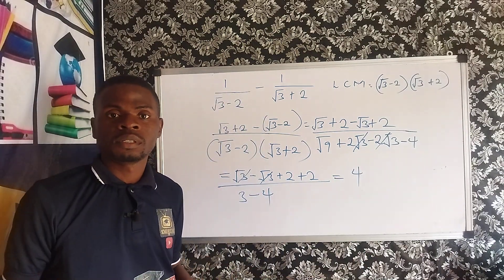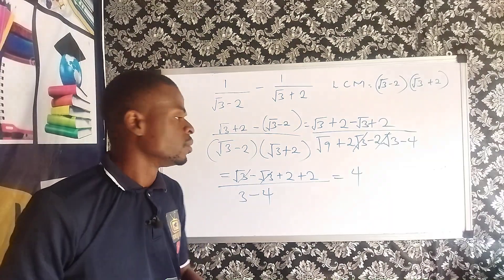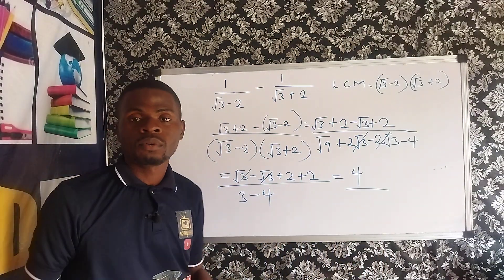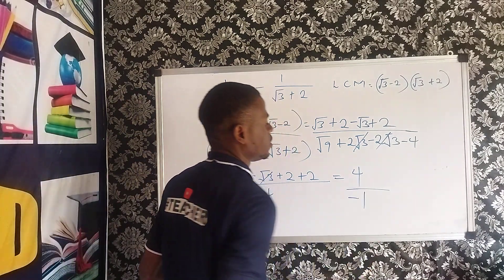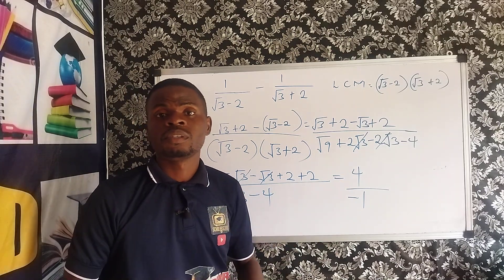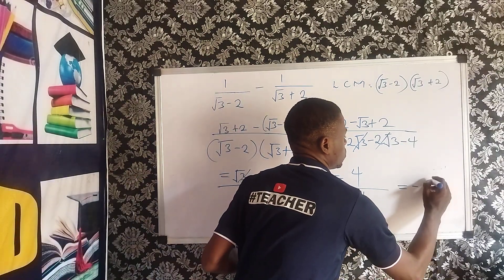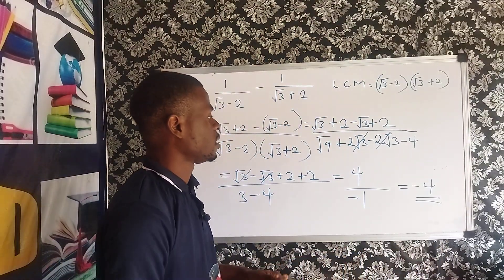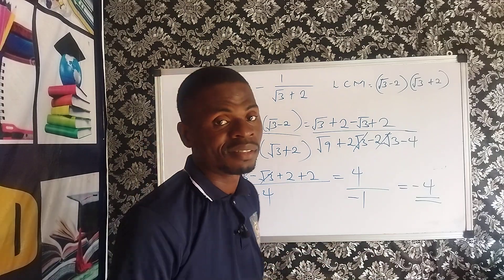Please take note of that. Now, am I communicating? Good. So, divide it: 3 minus 4 gives us minus 1. So, now divide it: 4 divided by minus 1 gives us minus 4. So, our answer is minus 4 — that's our final answer.